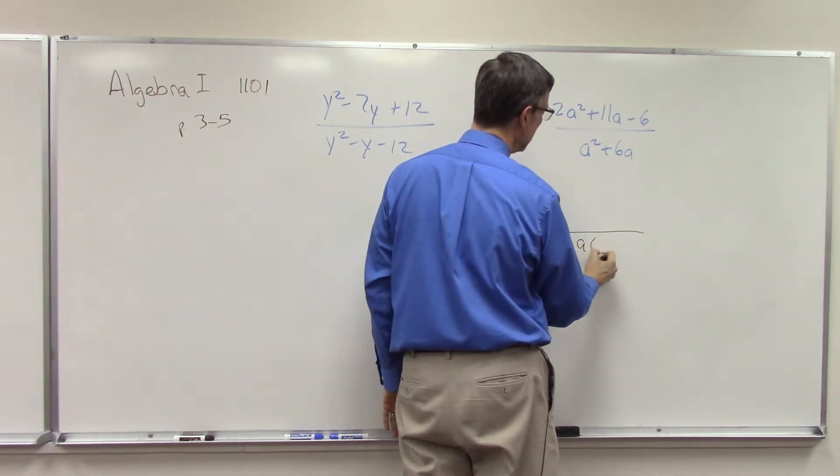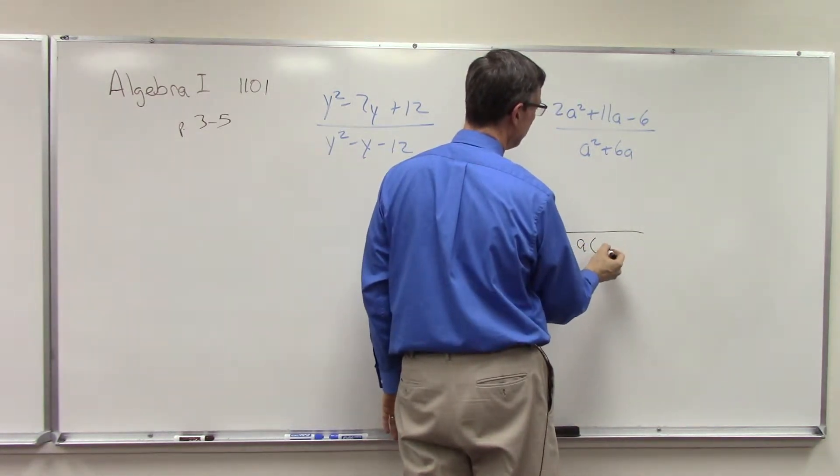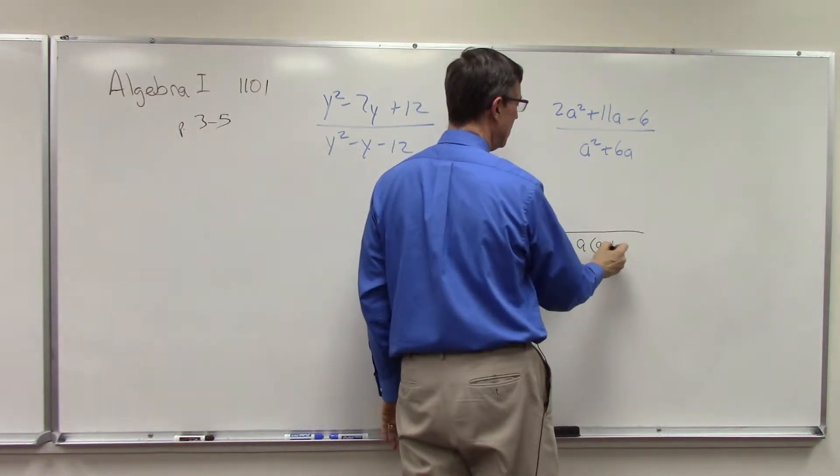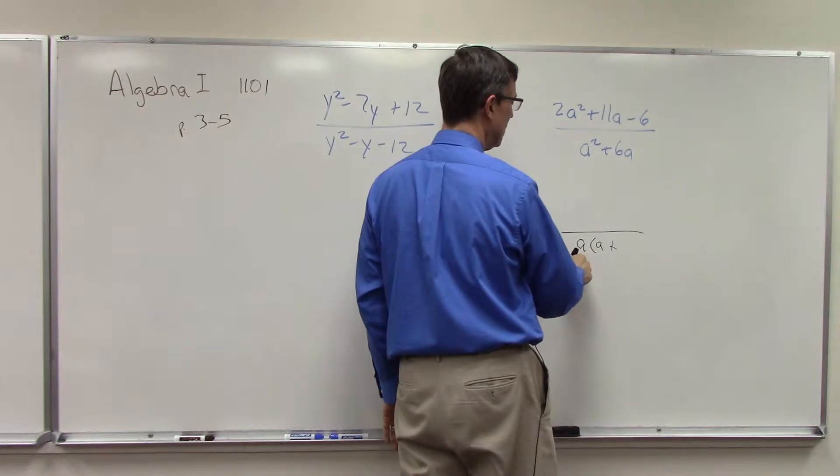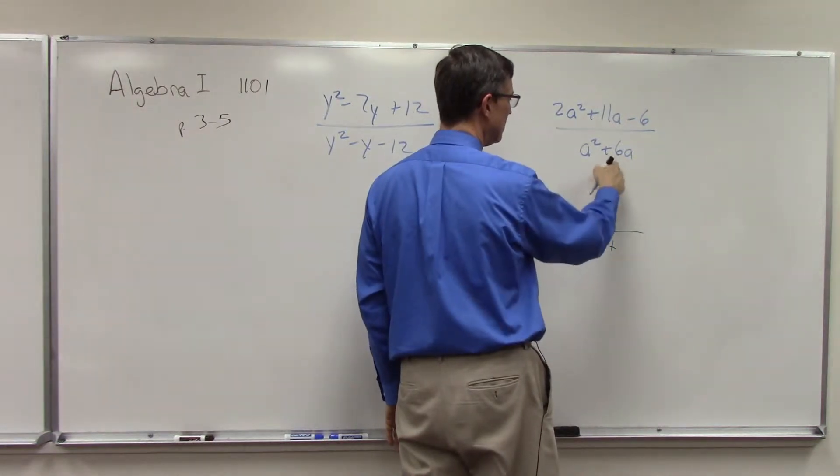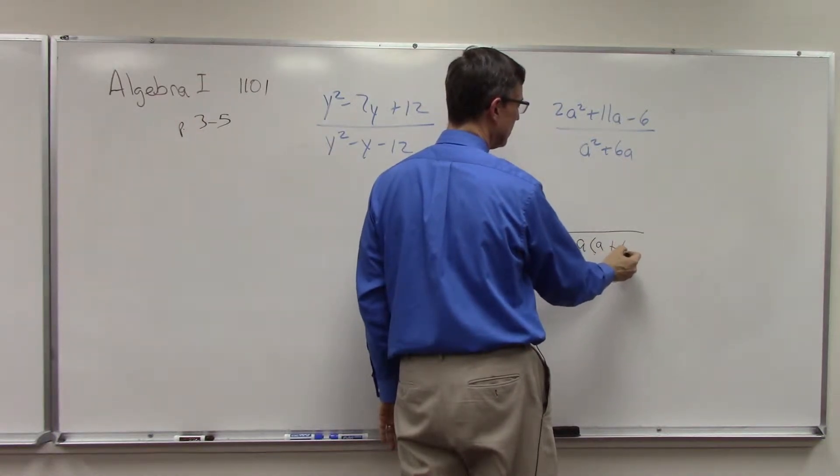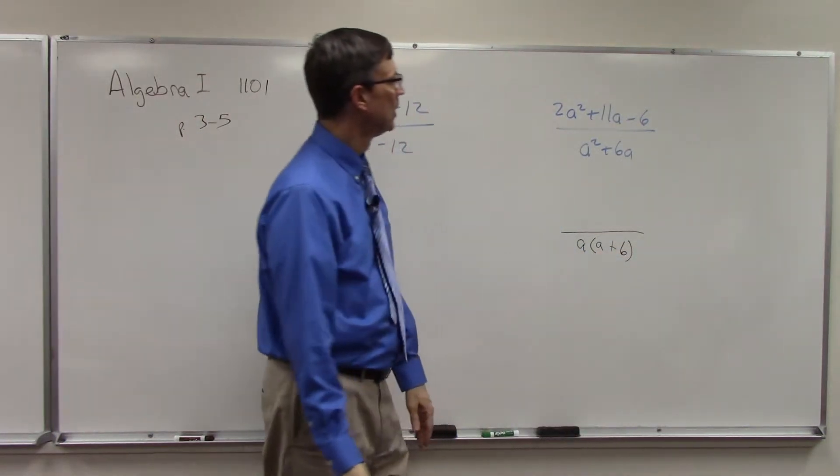All right, so I'm going to factor the a out, and then what are we left with? a times a would be the a squared, plus factor the a out from 6a, and what do you think goes here? Six. Good.